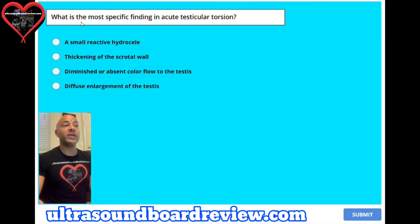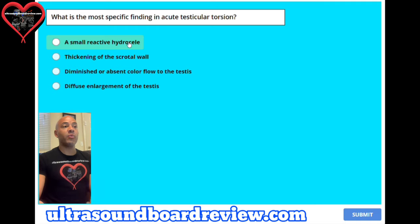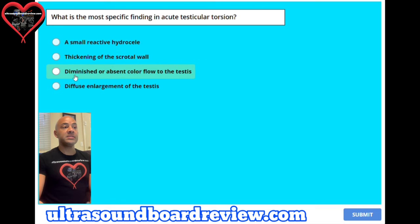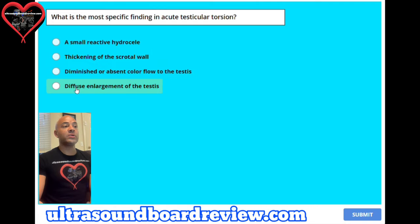Question 3. What is the most specific finding in acute testicular torsion? A. A small reactive hydrosyl, B. Thickening of the scrotal wall, C. Diminished or absent color flow to the testes, or D. Diffuse enlargement of the testes?